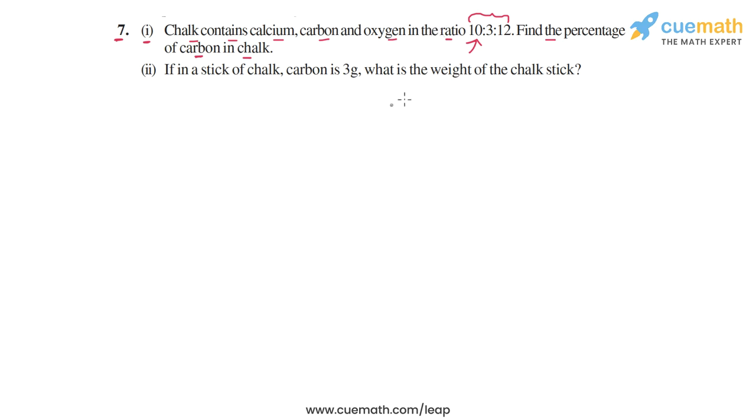This is actually quite easy, so let's start by writing the ratio. We are given that calcium to carbon to oxygen—I'm using short forms—this ratio is 10:3:12. This means that the total of parts in this ratio...